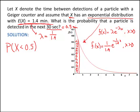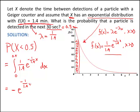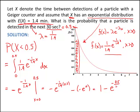We're going to be integrating because x is a continuous random variable. So this is the integral from 0 to 0.5 of f of x, which is 1 over 1.4 times e to the negative 1 over 1.4 times x dx. This is not hard to integrate — it's an exponential. This gives negative e to the negative 1 over 1.4 times x, evaluated from 0 to 0.5. Plugging in 0.5 and 0, this is 1 minus e to the negative 0.5 over 1.4.